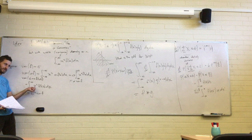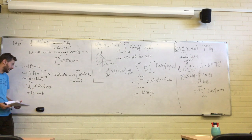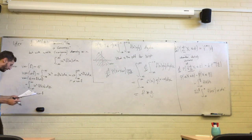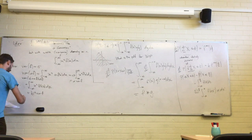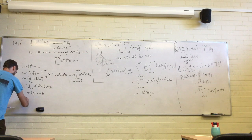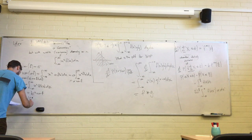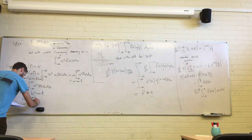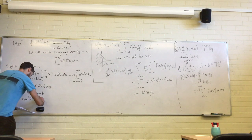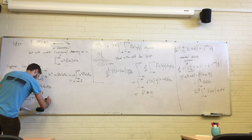And the final one is the interesting one: the variance of a convolution product is just n times the variance of f.